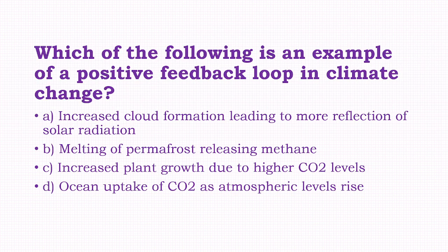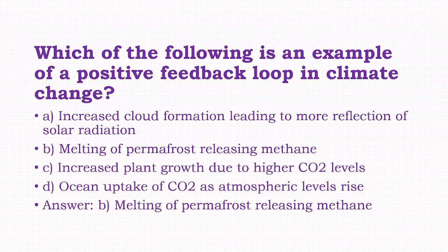Which of the following is an example of a positive feedback loop in climate change? Options: increased cloud formation leading to more reflection of solar radiation, melting of permafrost releasing methane, increased plant growth due to higher CO2 levels, ocean uptake of CO2 as atmospheric levels rise. The answer is option B, that is melting of permafrost releasing methane.